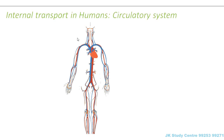Here we will first talk about the internal transport in humans. Why are we going to talk about humans first? Because we just finished our discussion on the respiratory system in human beings, so if I start with the transport system in human beings it will be easier for you to understand, since the respiratory system is still fresh in your mind. Now the internal transport system in humans is known as the circulatory system.